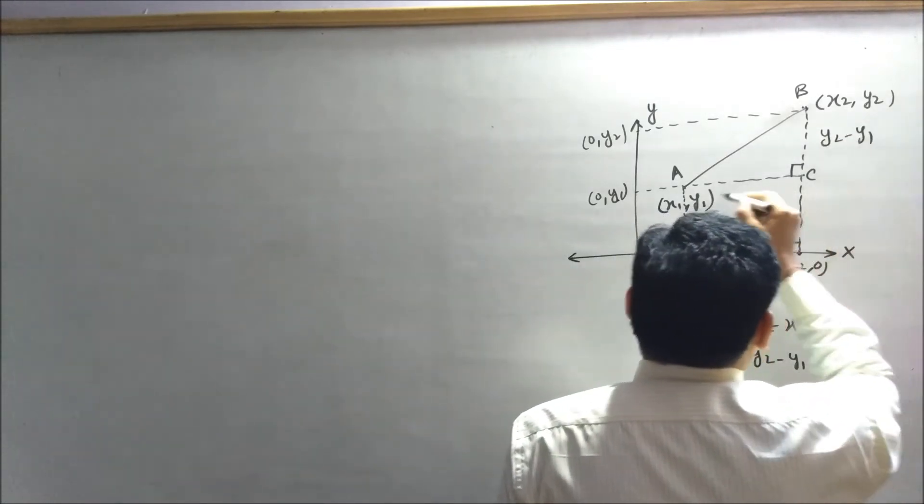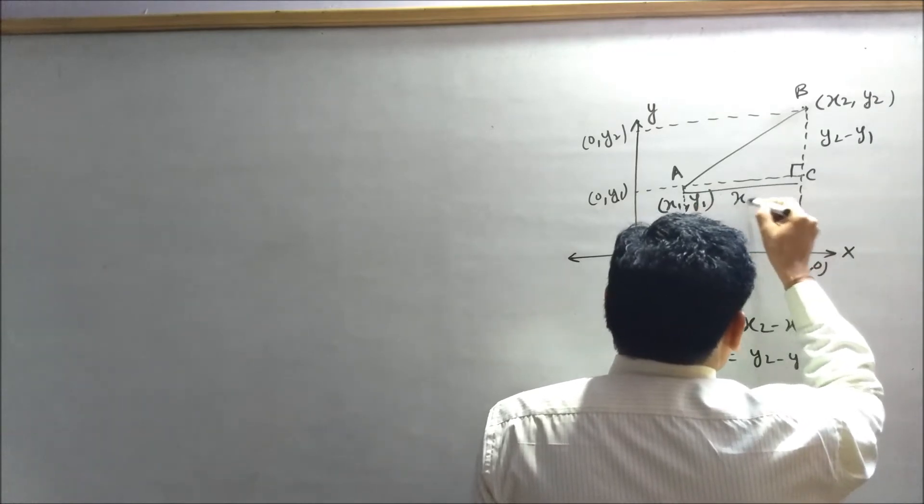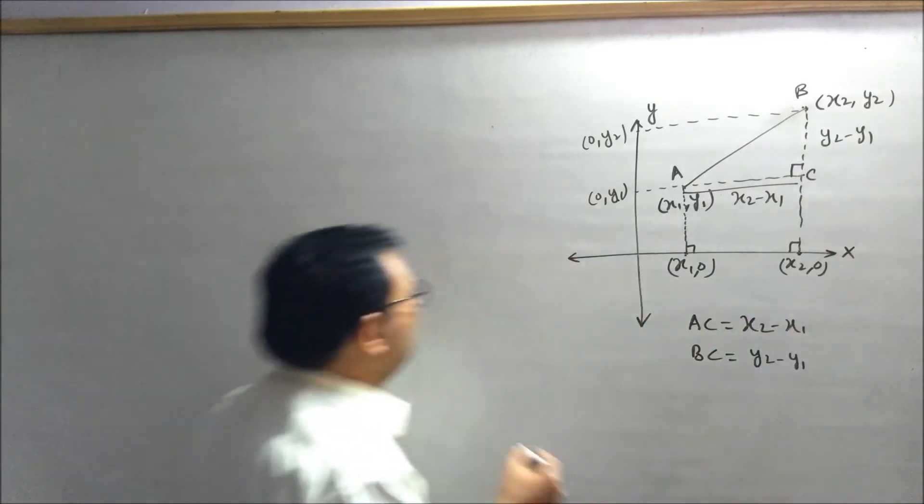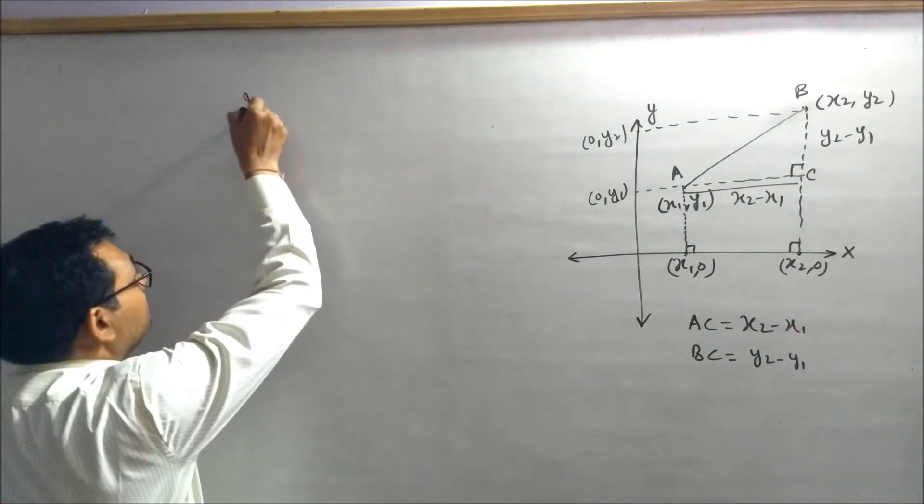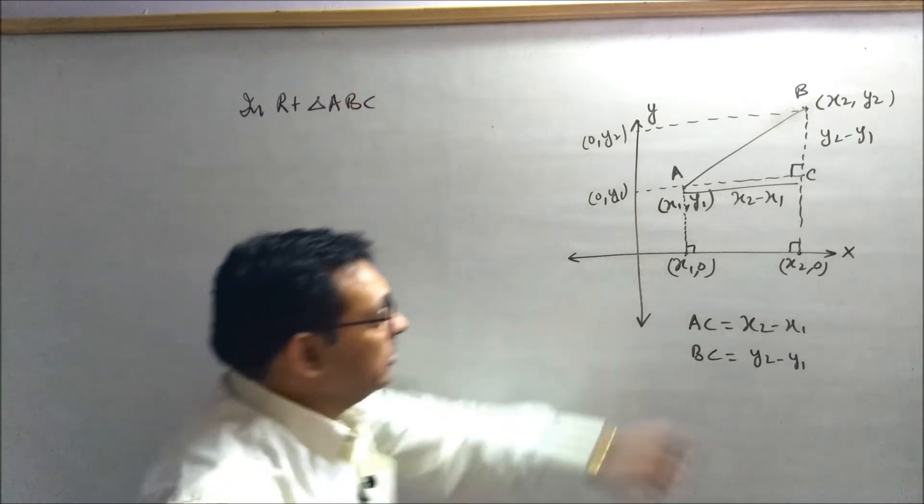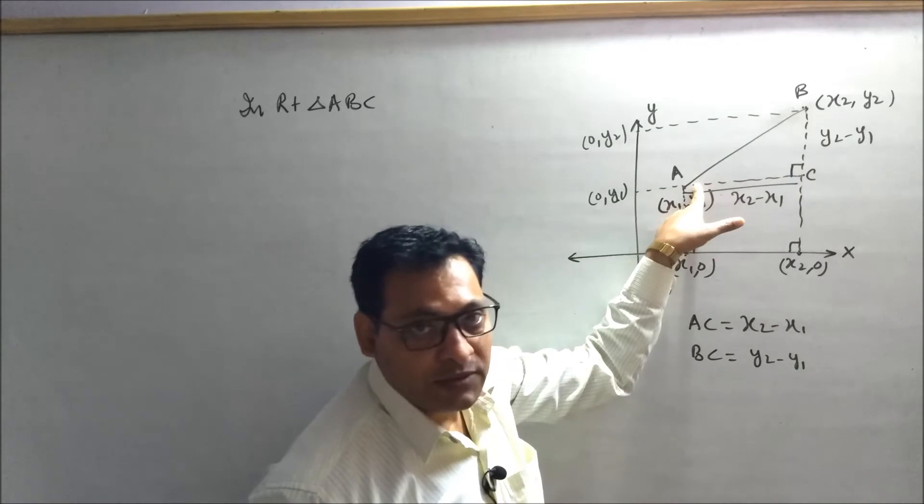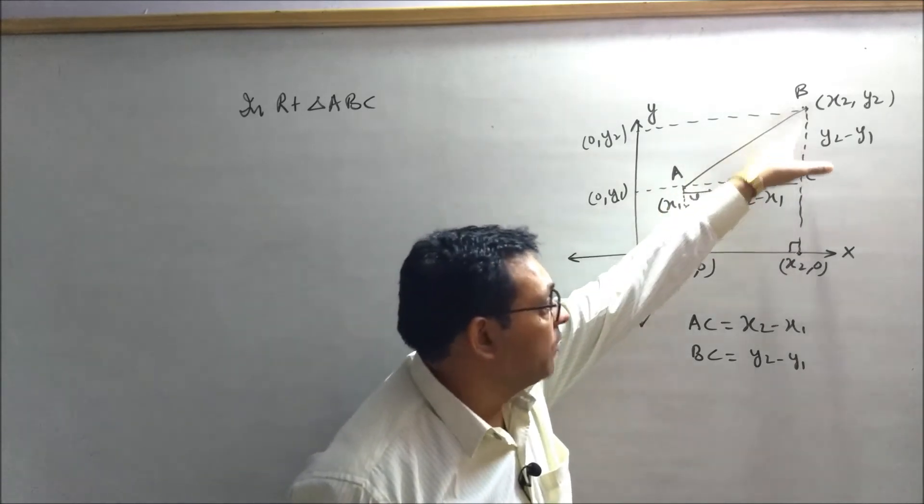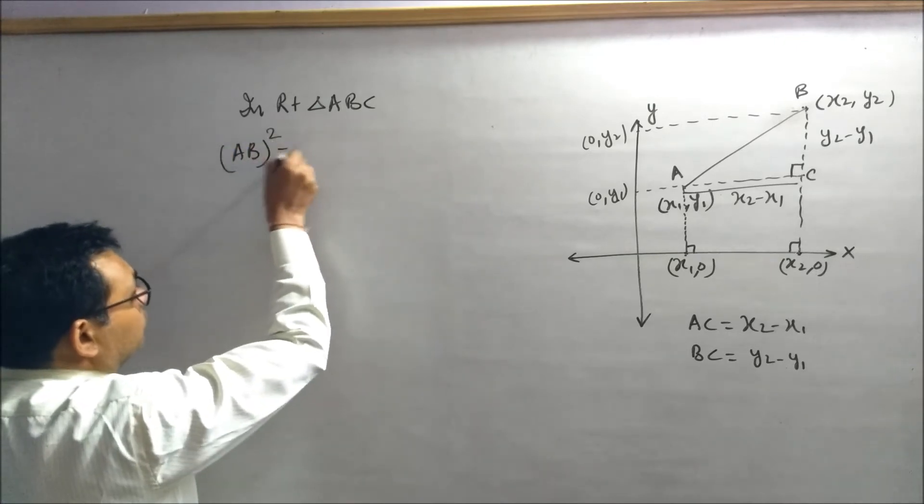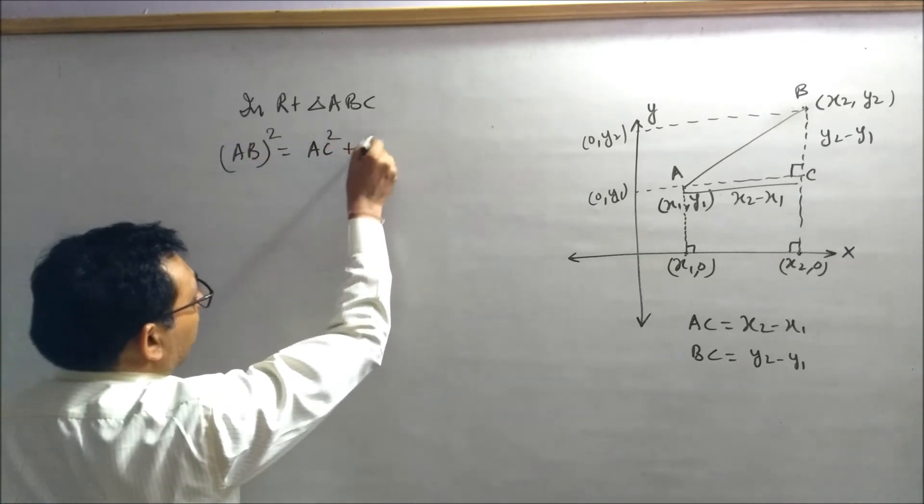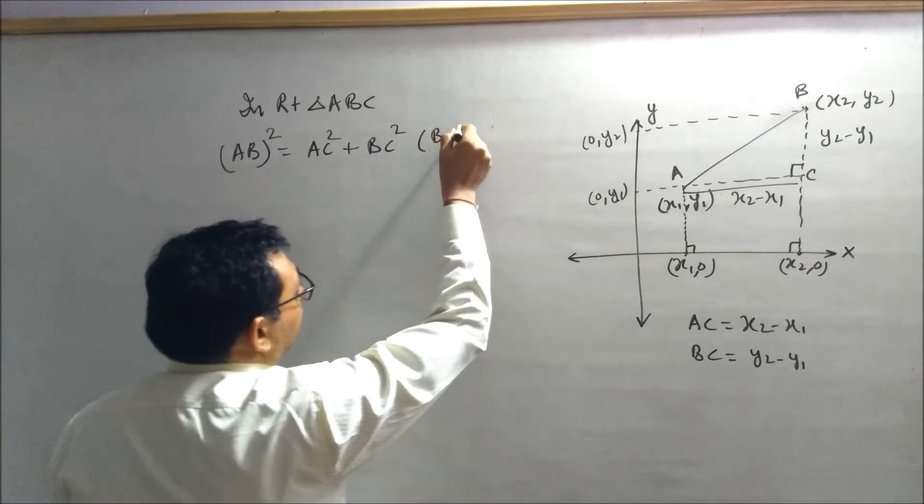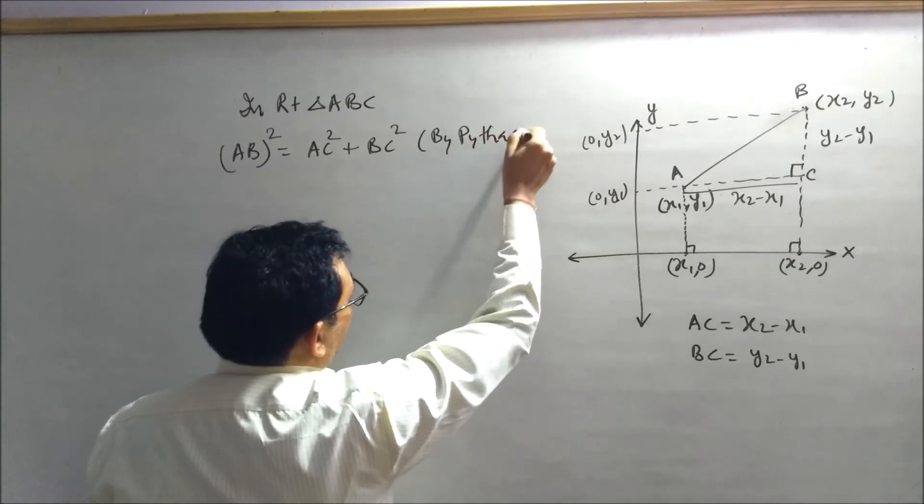Let's consider right triangle ABC. In right triangle ABC, this is the perpendicular and AC is the base, AB is its hypotenuse. So square of AB will equal square of AC plus square of BC by Pythagorean theorem.